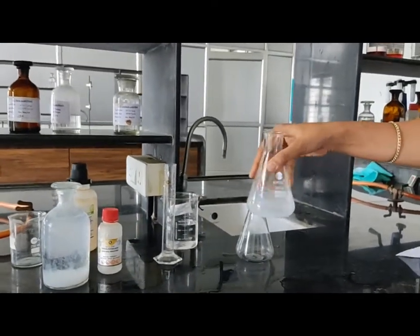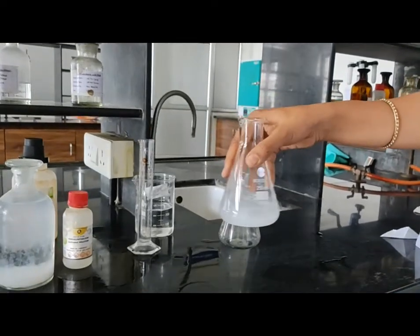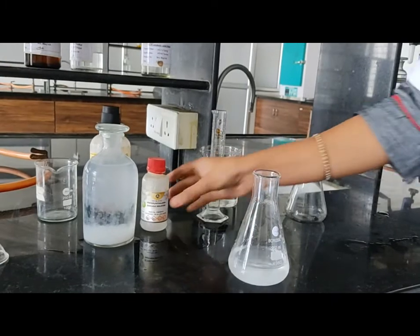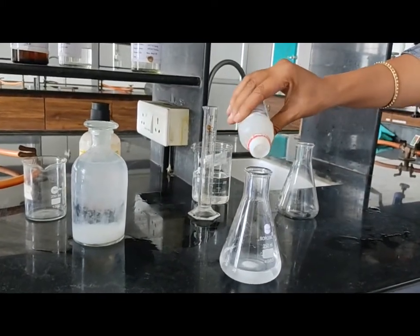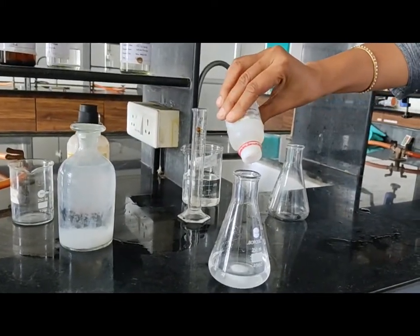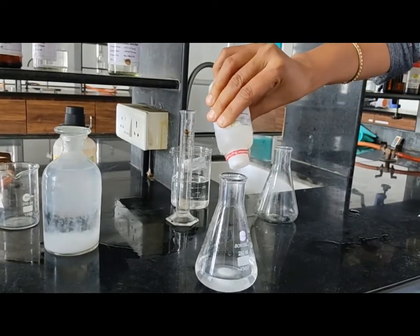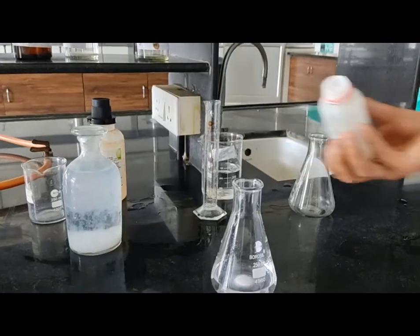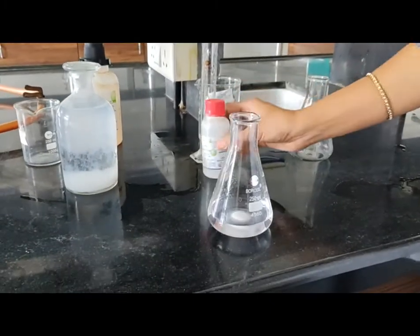Add water to dissolve the potassium hydrogen phthalate, then add 0.1 ml of phenolphthalein indicator. Shake it properly.